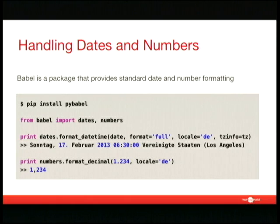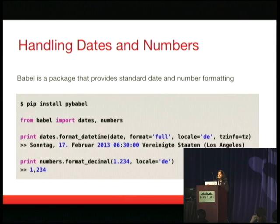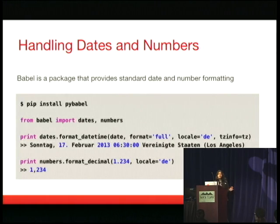PyBabel is a great package that you can install for standard date and number formatting, and it's very simple to use. You just simply import dates and numbers, and then simply call the format_datetime function, and that takes in a datetime object, a locale, and even handles time zones. You can see that the outputted string for German time in PST looks something like that. There are different formats you can handle, like a full form or a long or short form. Even for numbers, you just call format_decimal, and all of your decimal points get converted to commas so that it's appropriate for a German locale, for instance.